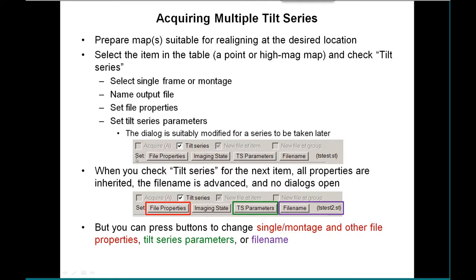Once you get through all those dialogs, this is what things look like in the upper part of the properties section with all these buttons enabled. The nice thing is you can check tilt series for your next location without going through all the dialogs again, because all the properties get inherited and the file name is advanced automatically. For example, if it was 'TS test,' it turns that into 'test 2'; if you had '1' or '1a,' it becomes '2' or '2a.' If you do want to change something, just press one of the buttons to change the file properties, whether it's single file versus montage, the tilt series parameters, or the file name.